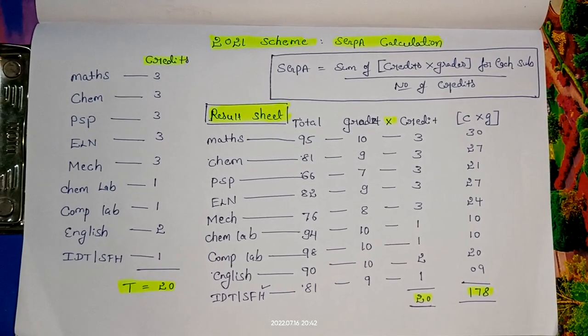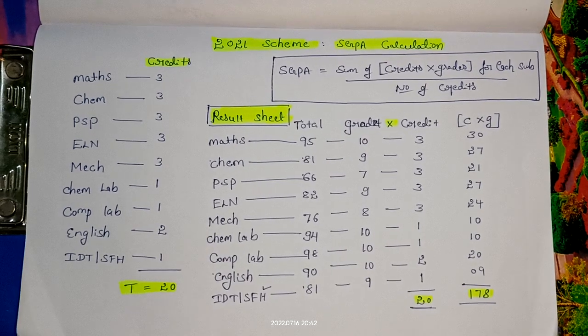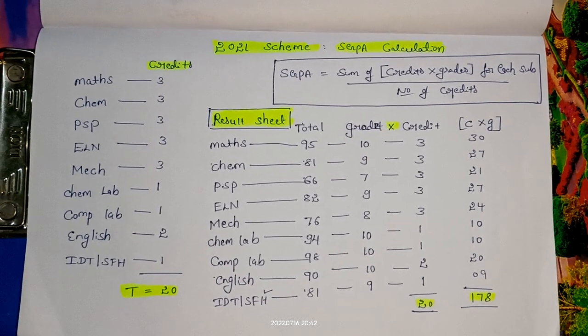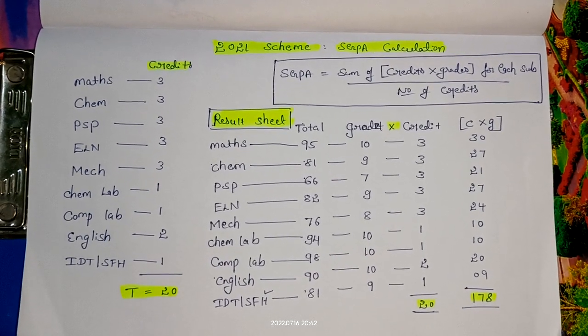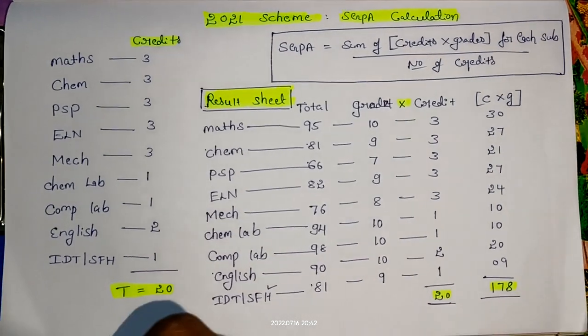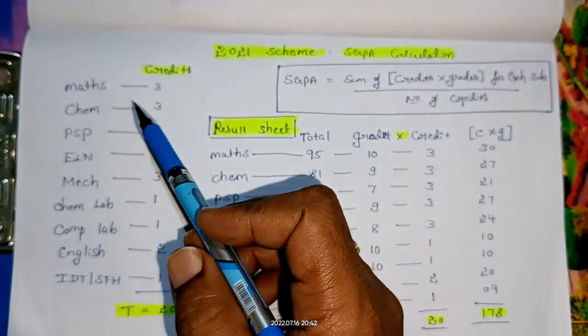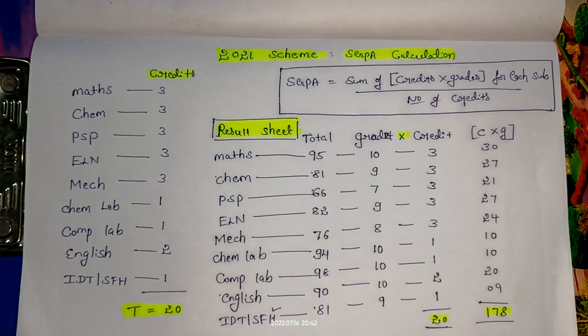First of all, in VTU first year we are having two cycles: P-cycle and C-cycle, which are the Physics cycle and Chemistry cycle. For both cycles, this video is appropriate. First, we'll discuss the C-cycle.